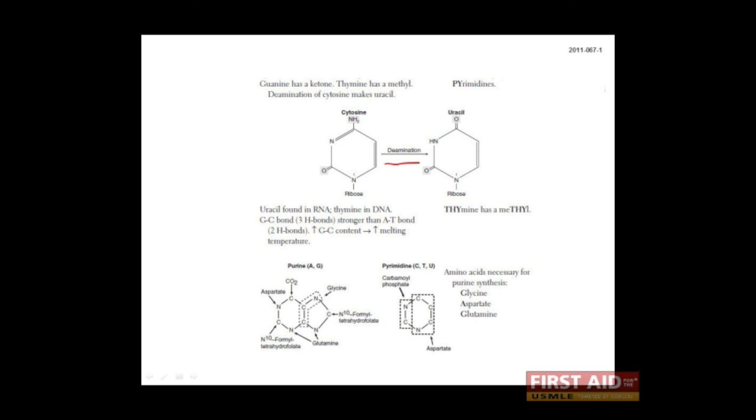Another important fact regarding purines and pyrimidines is that three amino acids are required for their synthesis. These three amino acids are glycine, aspartate, and glutamine. You can remember this with the mnemonic GAG.